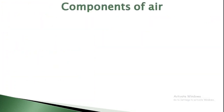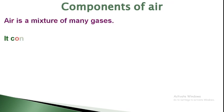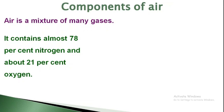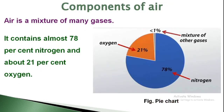Components of air — air is a mixture of many gases. As we all know, we have a variety of gases that make up our air. It contains almost 78% of nitrogen and about 21% of oxygen. In this pie chart, the major amount of air is occupied by nitrogen at 78%, whereas oxygen occupies 21%, and 1% or less than 1% is occupied by a mixture of other gases.